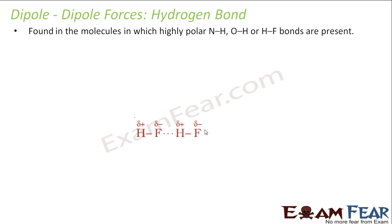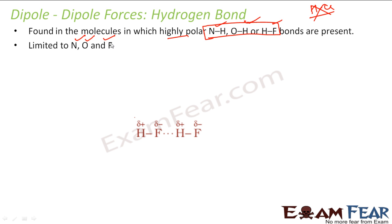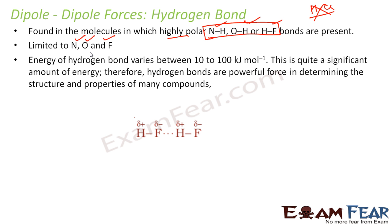Now we'll take up hydrogen bonds. As mentioned, a hydrogen bond is a special type of dipole-dipole force. Hydrogen bonds are found only in three combinations: N–H, O–H, or F–H. Only in these three types of combinations do we get hydrogen bonds, not in others. In fact, even HCl does not have hydrogen bonds. Hydrogen bonds are found only in highly polarized bonds, which are limited to nitrogen, oxygen, and fluorine.